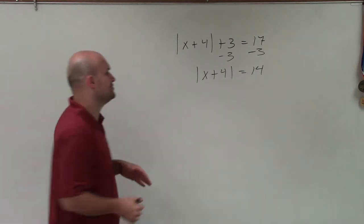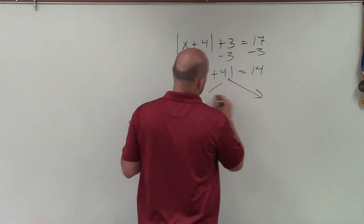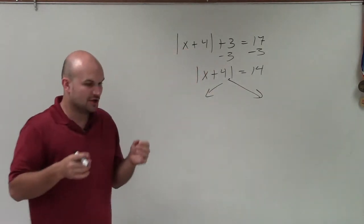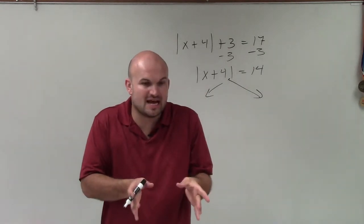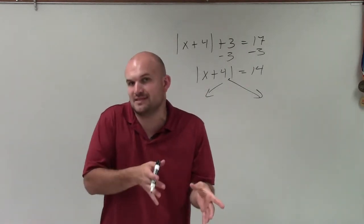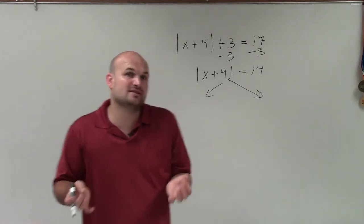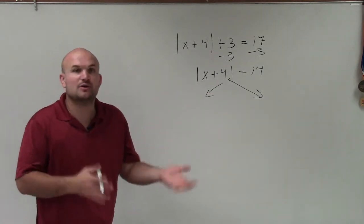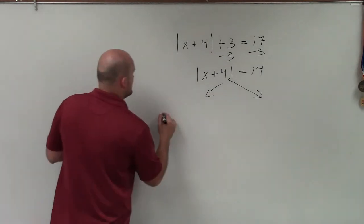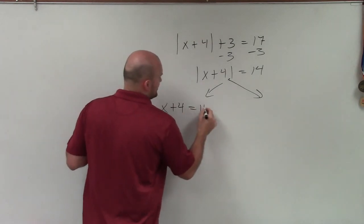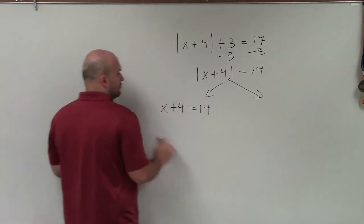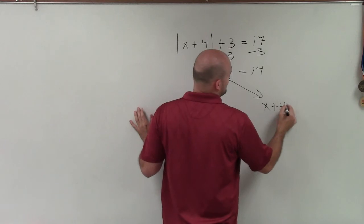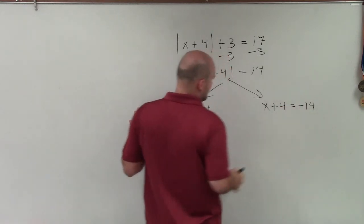Now I can set up my two cases. Remember, when dealing with absolute value, you can have a negative number inside or a positive number, and they're still going to equal the same value. So to get rid of the absolute value, I create my two cases where x plus 4 could equal positive 14, or x plus 4 could equal negative 14.